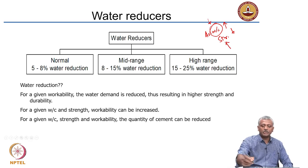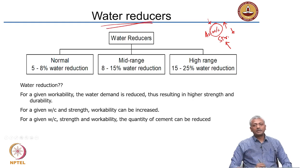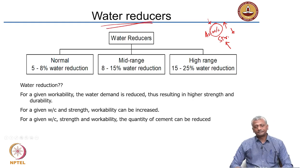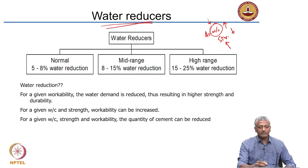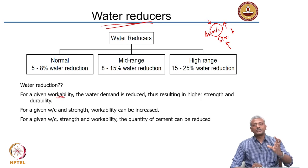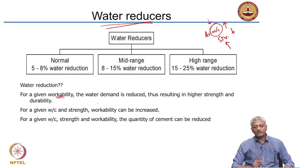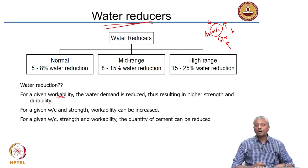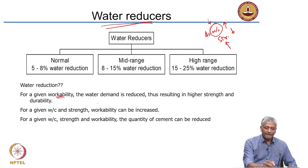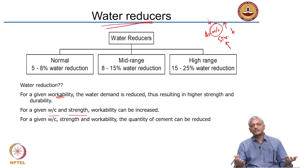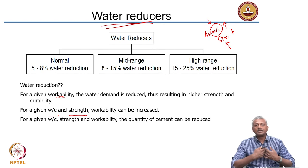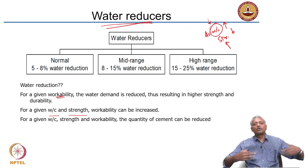For a given workability — a given consistency or fluidity of a concrete mix — the water demand can be reduced, resulting in higher strength and durability. Alternatively, you do not change the water-cement ratio but keep the strength constant, and what you get is a concrete that moves around freely — it becomes flowable. When concrete becomes flowable, you do not have to spend a lot of energy trying to compact it.